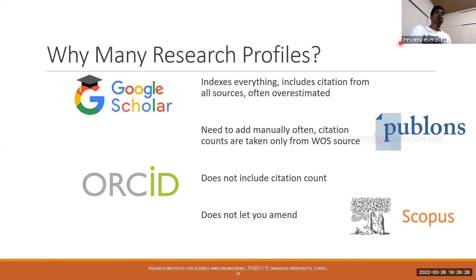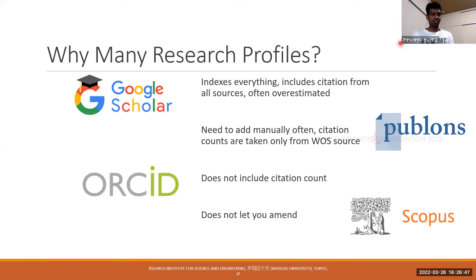So why have many research profiles? I heard a question from the audience, which was read out by Dr. Kumar, asking: there are so many research profiles — Google Scholar, Publons, Scopus, ORCID, ResearchGate — so which one should be relied upon? The thing is, you cannot weigh one research profile or platform against another, because all of them have their own merits and demerits.